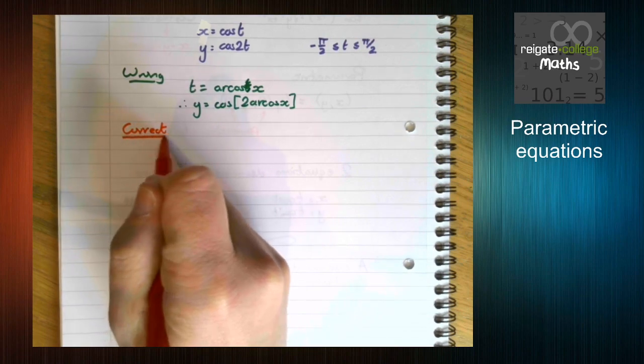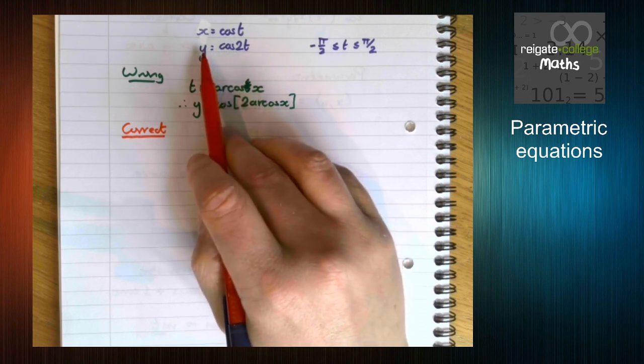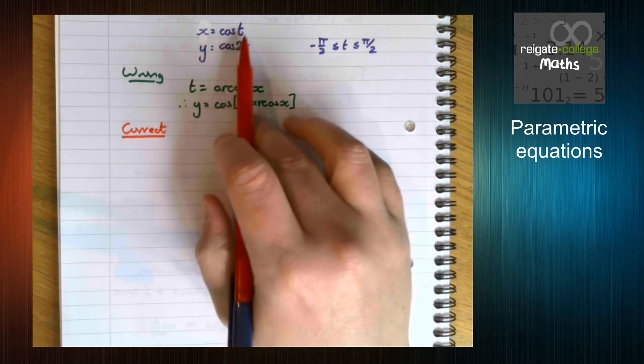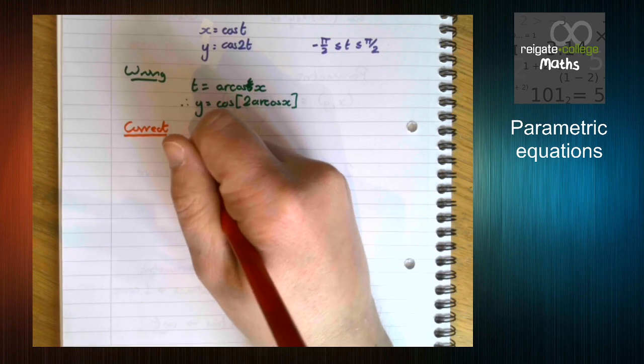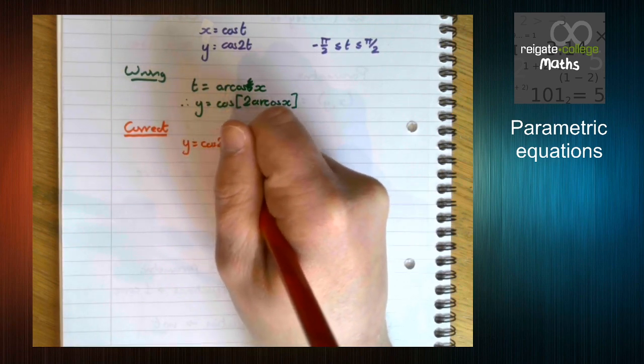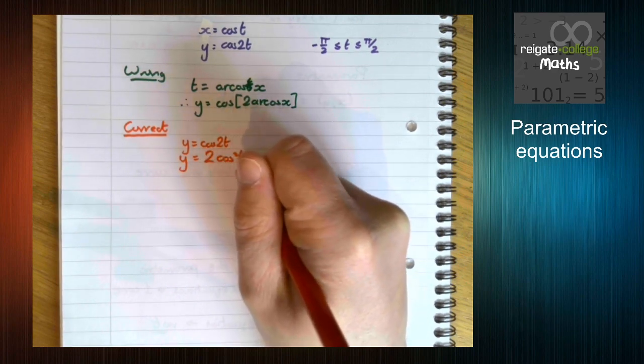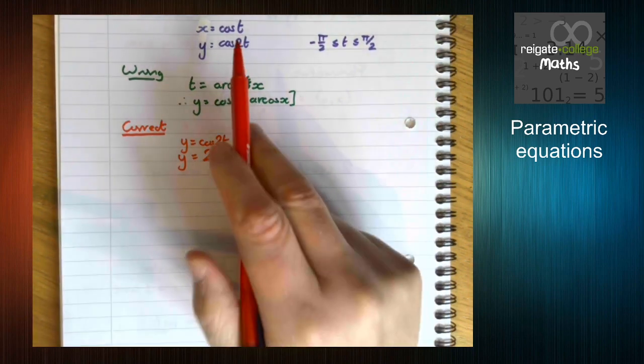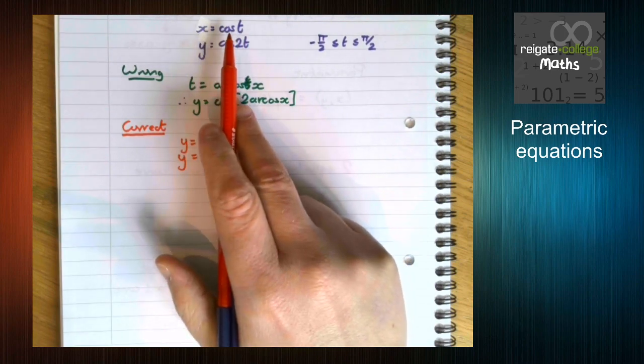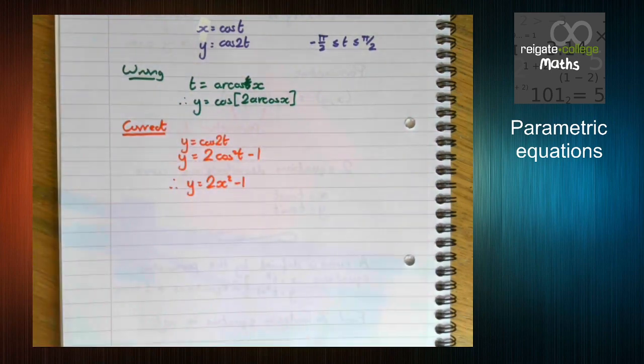So the correct way to look at this question is think about the trig identities. Is there a way to relate cos 2t to something involving t? And in this case, there absolutely is. Because we know that cos 2t is 2 cos squared t minus 1. We know that cos t is x, so cos squared t must be x squared. So this is in fact a relatively basic quadratic.